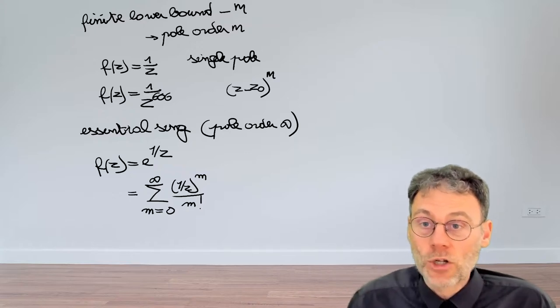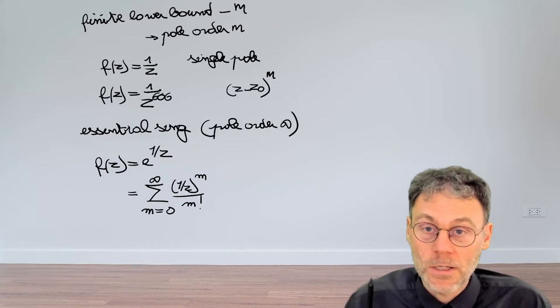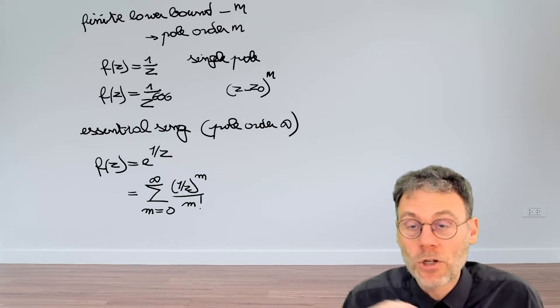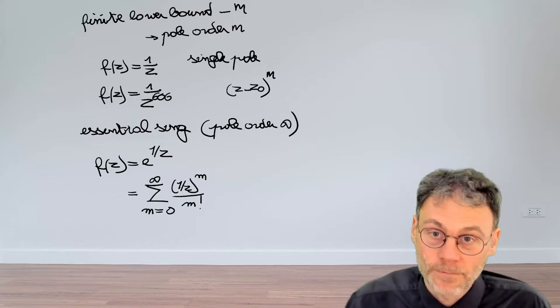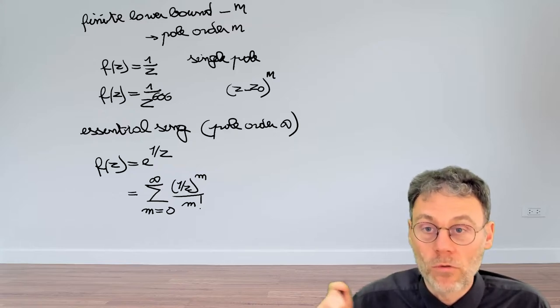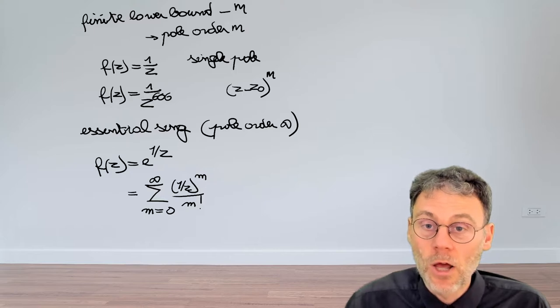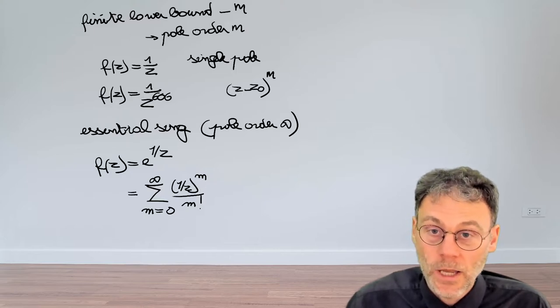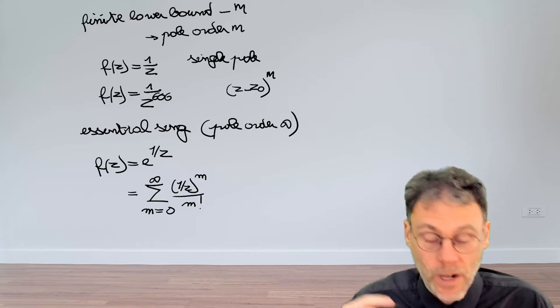The final thing I want to mention about these essential singularities is that even the limit of the function there is not well defined. Actually, you can show that in a small region around that essential singularity, your complex function will actually take almost all possible complex values. So that's very interesting. The limit is not defined.